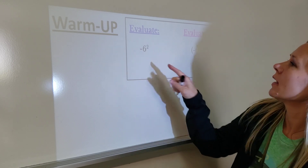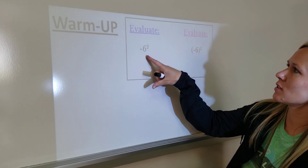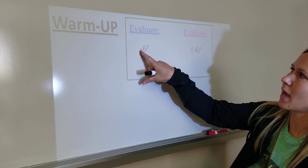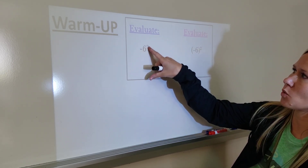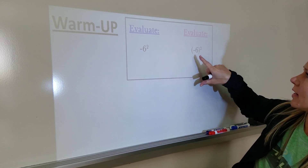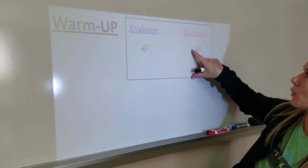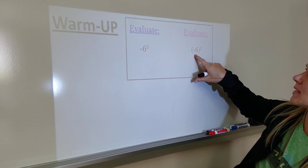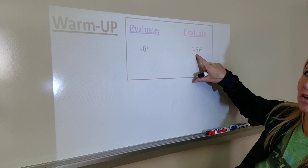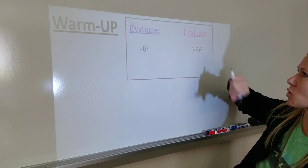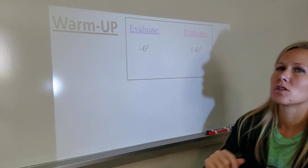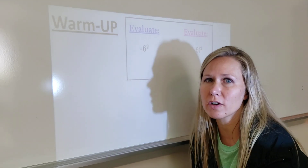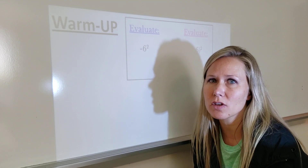This expression is saying the opposite of six squared, and here with parentheses around it, it's saying take the negative six, the entire thing, and square it. So two very different things giving you two very different answers.